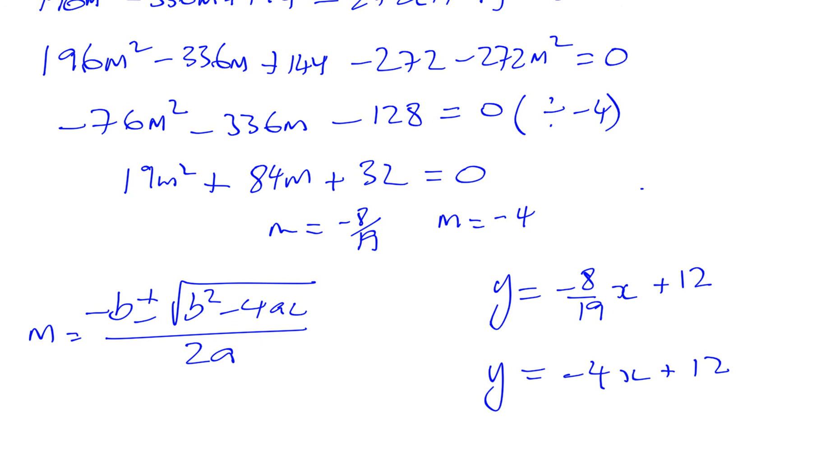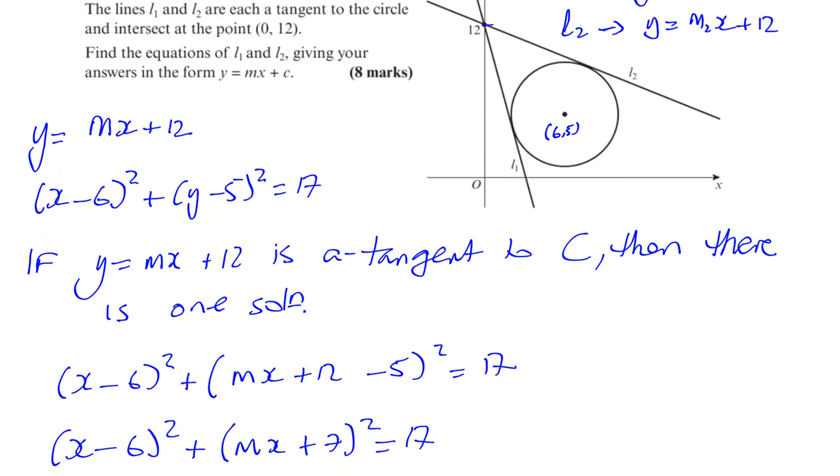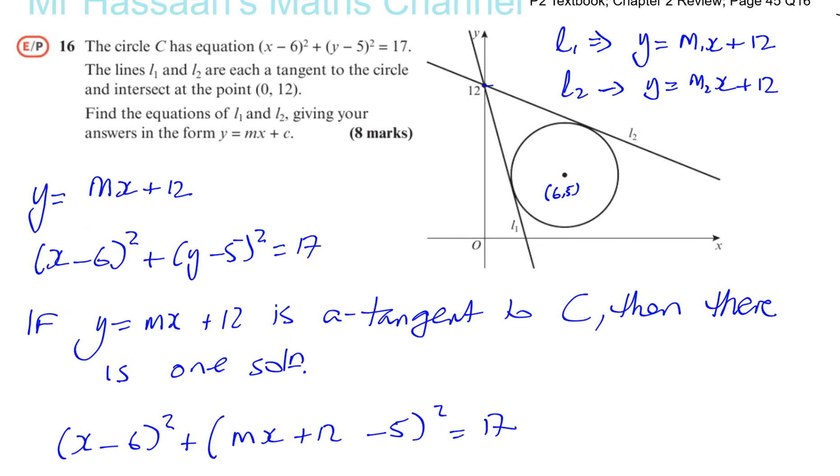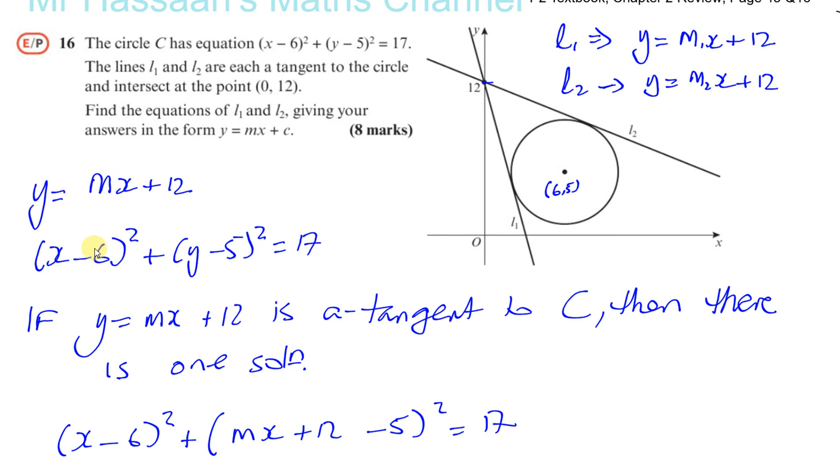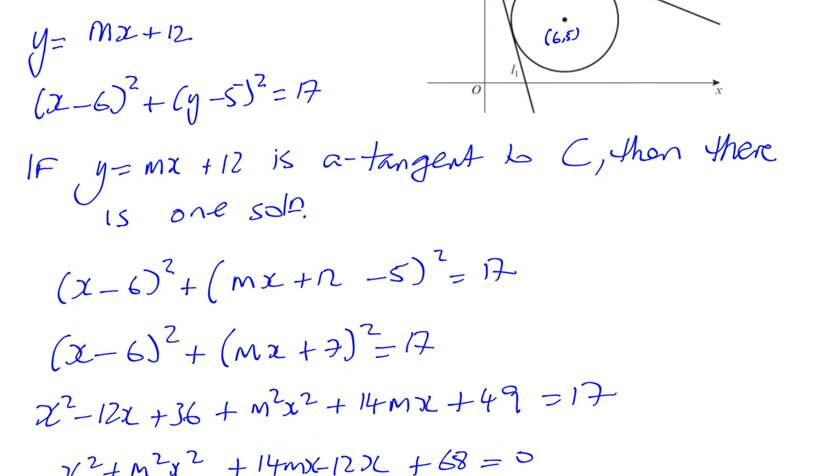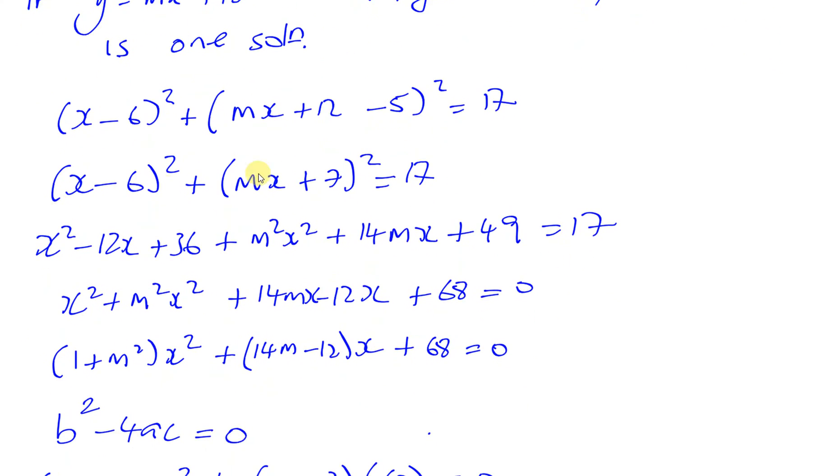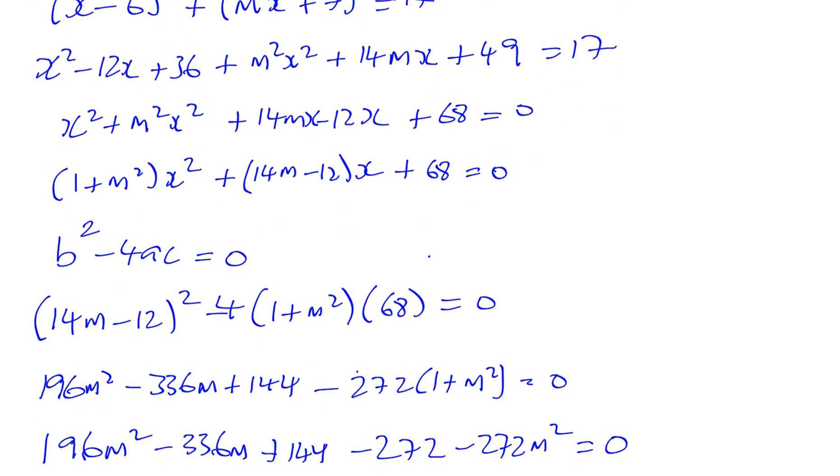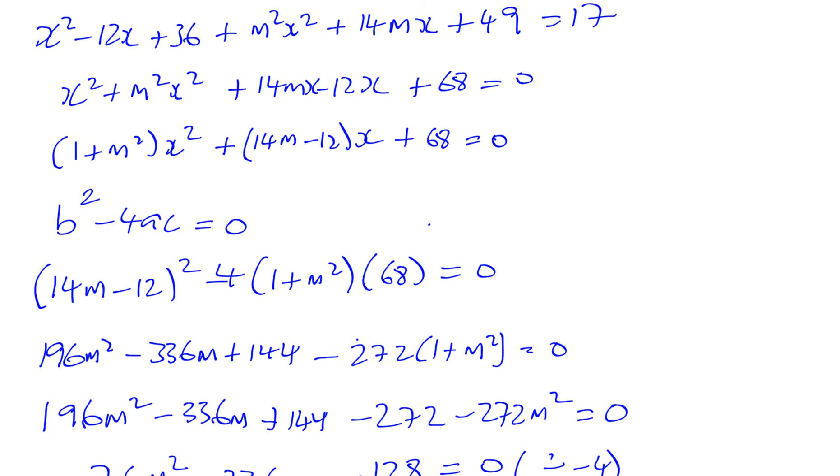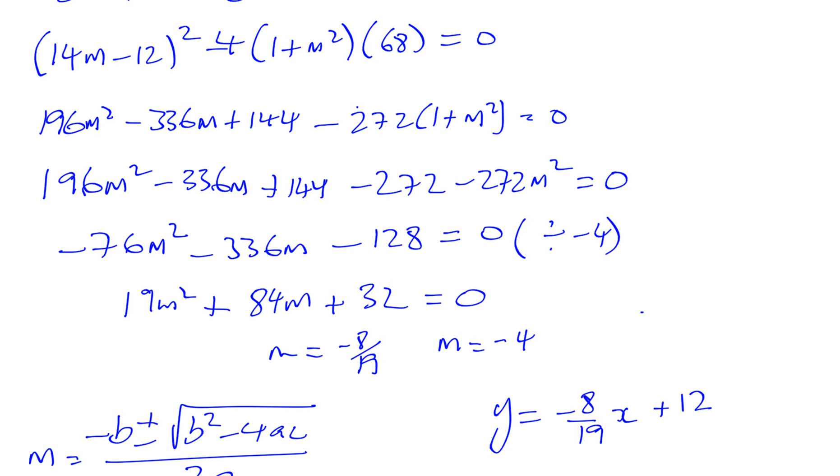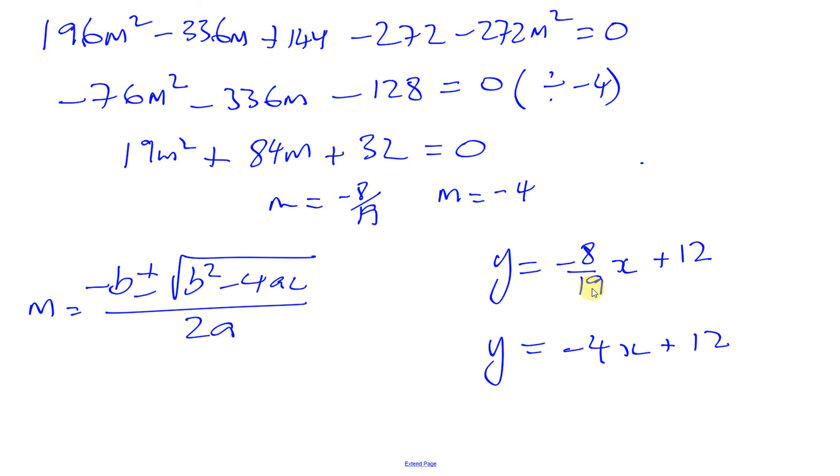It's a bit of a complicated one, but it's still doable. So be aware of questions like this. Basically, we know that if this is a tangent to this, then when I substitute this into here, there will be one solution. So when you substitute mx + 12 instead of y, you end up with a quadratic. And for that quadratic to have one solution, b² - 4ac = 0, and you end up with a quadratic in m, and that will give you the two gradients which will cause a tangent that will have that property of going through (0, 12).